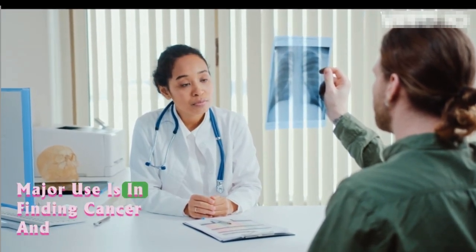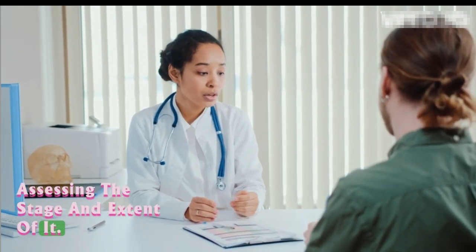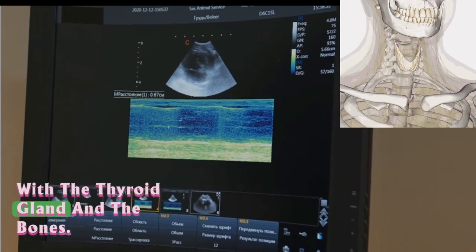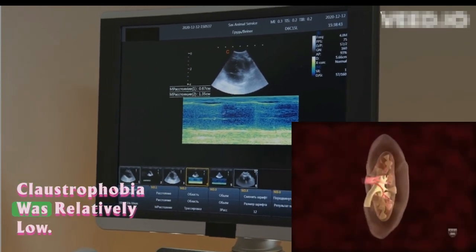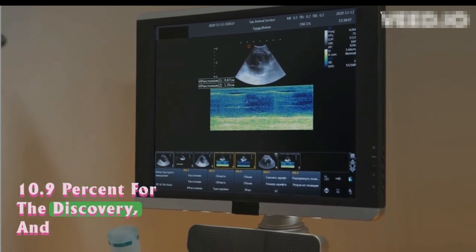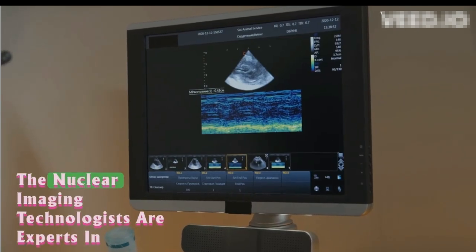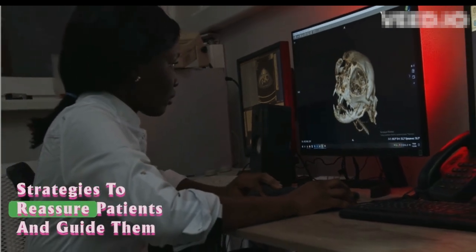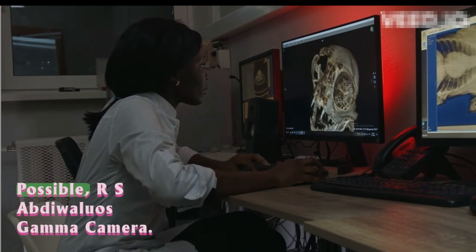One major use is in finding cancer and assessing the stage and extent of it. It is also used to assess issues with the thyroid gland and the bones. The subjective experience of claustrophobia was relatively low: 10.9% for the Discovery and 11.6% for the Veritan CT. The nuclear imaging technologists are experts in strategies to reassure patients and guide them comfortably through the scan as much as possible.